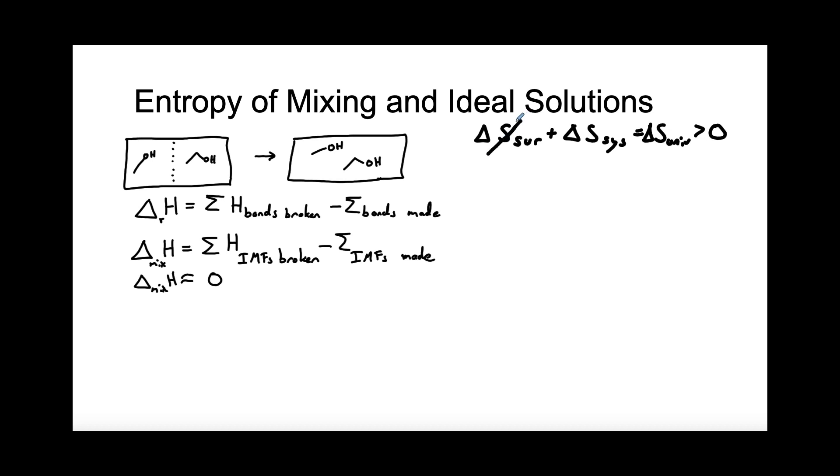Well delta S for the surroundings has to be zero as well because we said delta H is zero, so we're not putting heat out into the surroundings. So since there's no heat flow to the surroundings, there's no change in entropy of the surroundings. Which means we can say that delta S for the system has to be positive for this process.